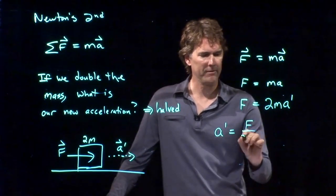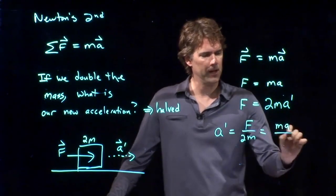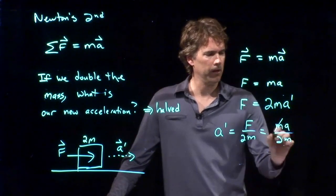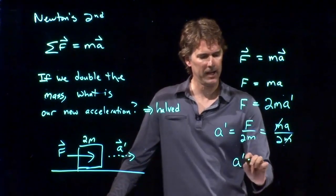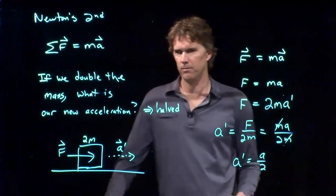Can we solve this thing for A prime? Sure. A prime is F over 2m. We know what F is from the first one: ma over 2m. The m's cross out and I get A prime equals a over 2. Good, piece of cake. I think your guess was right on the money.